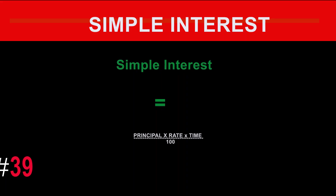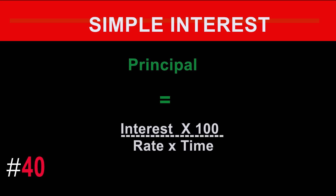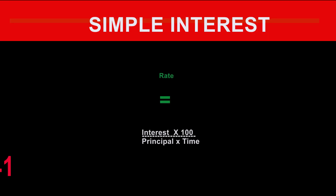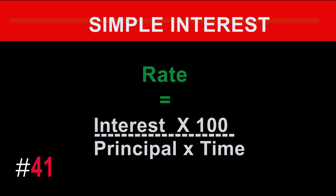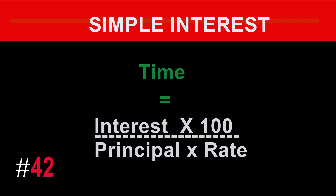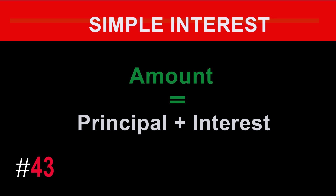The formula for simple interest equals principal times rate times time, divided by 100. The formula for principal equals interest times 100 divided by rate times time. The formula for time equals interest times 100 divided by principal times rate. The formula for amount equals principal plus interest.